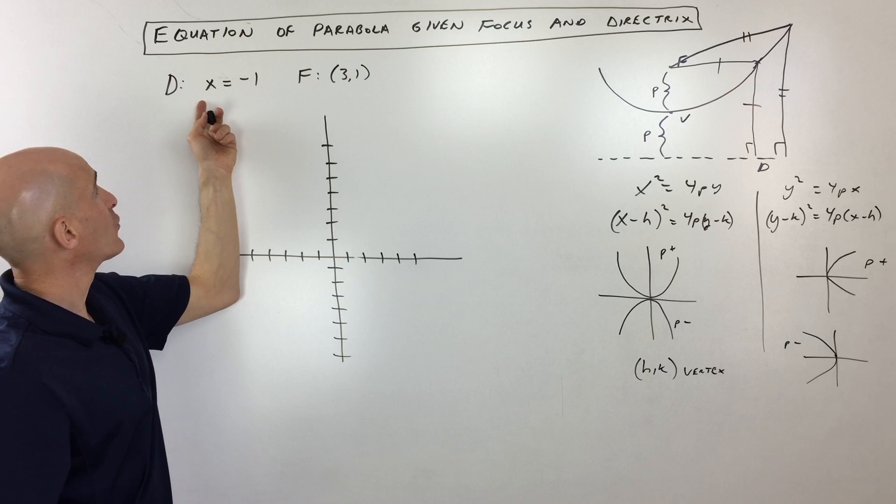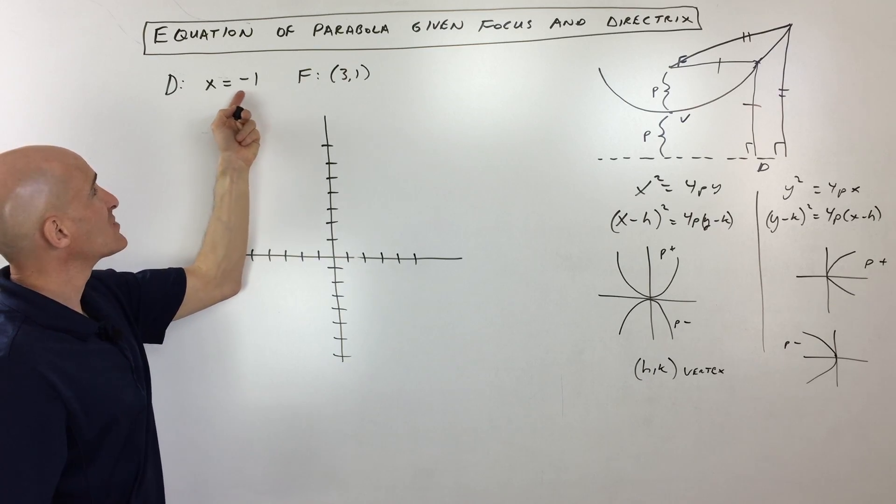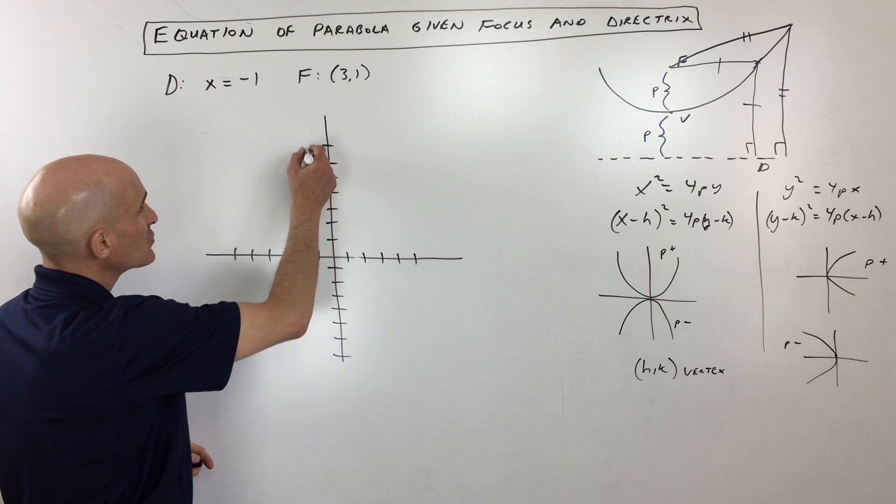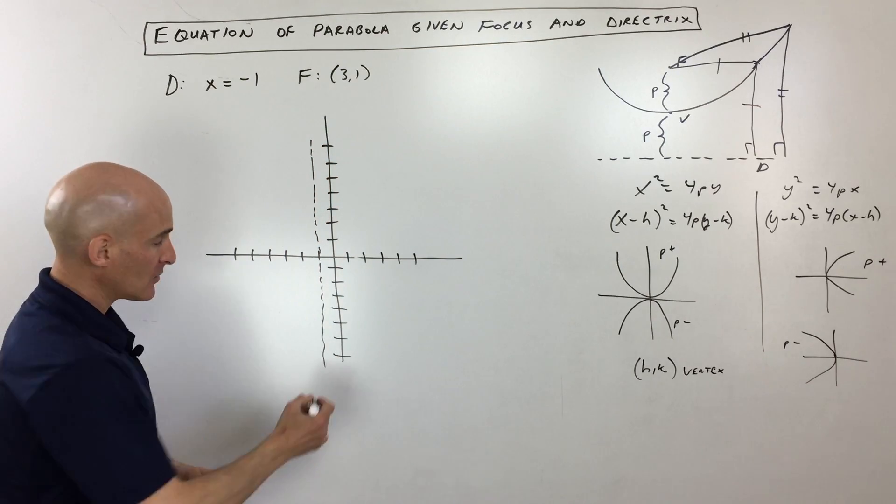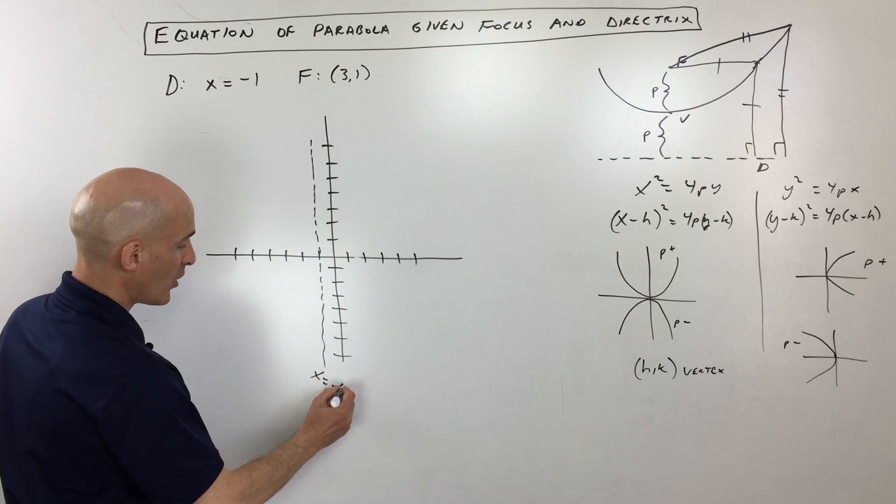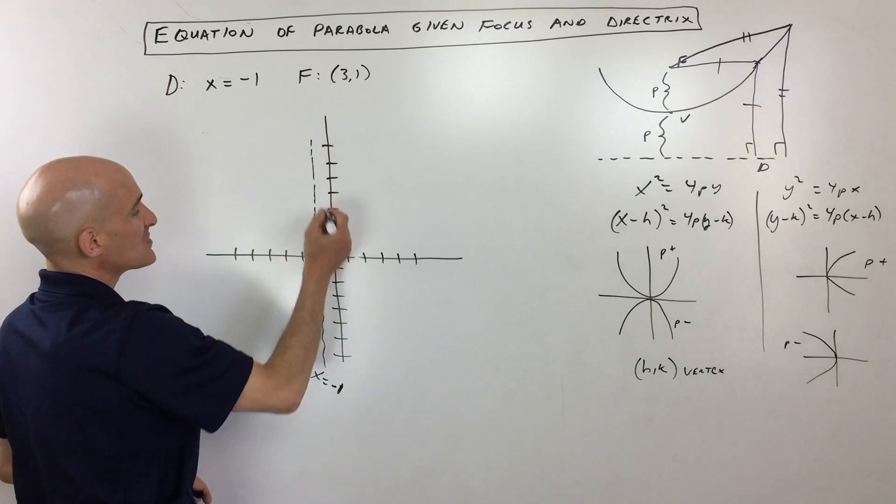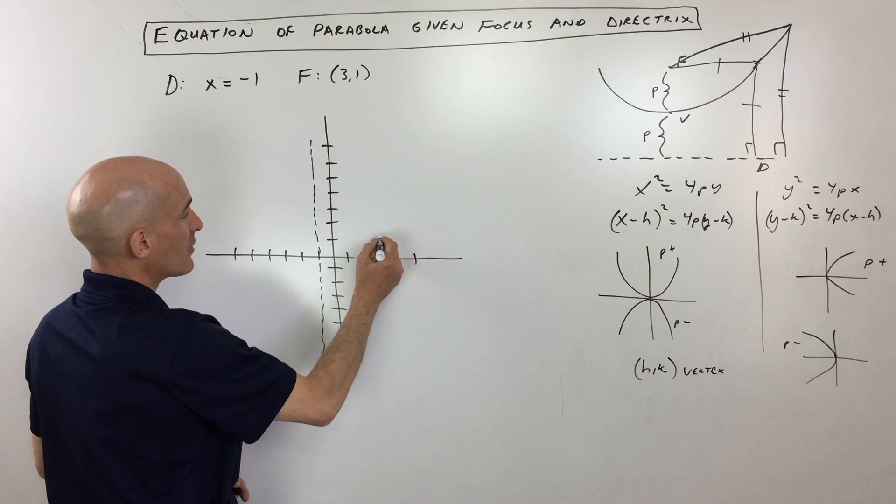So let's get into this problem and see if we can graph it and write the equation. The directrix here is at x equals negative one, so let's go ahead and sketch that in. That's just an imaginary invisible line, and we'll just write that x equals negative one right there.